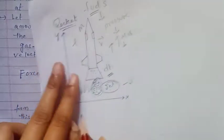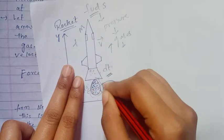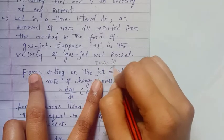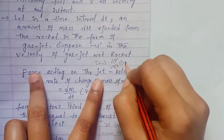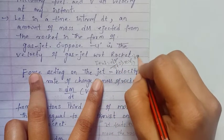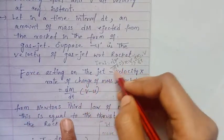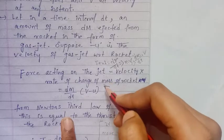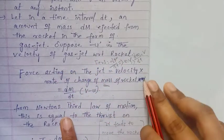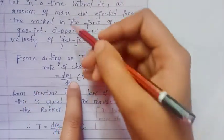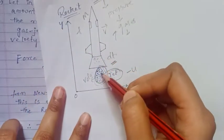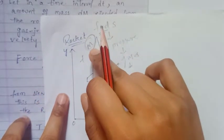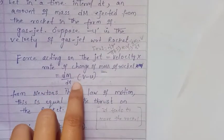The force acting on the jet is the rate of change of momentum: F external equals dp by dt. Since momentum p equals m into v, the rate of change of mass of the rocket times velocity gives dm by dt into v. The force acting on the jet is dm by dt.